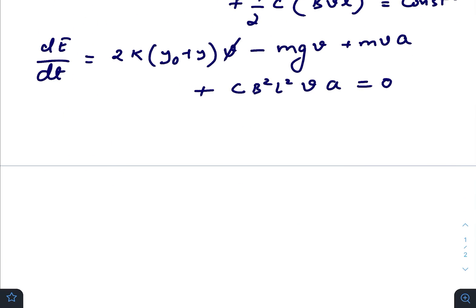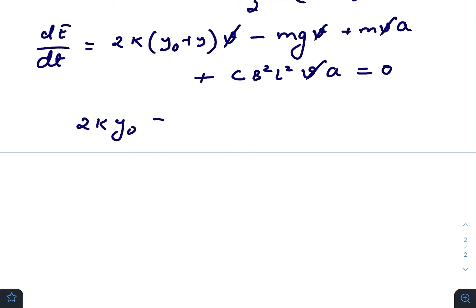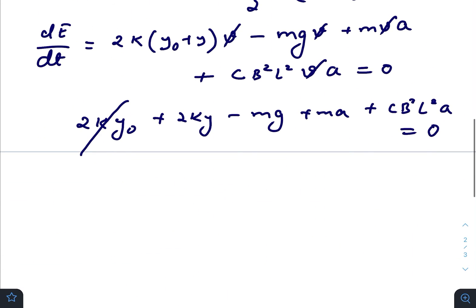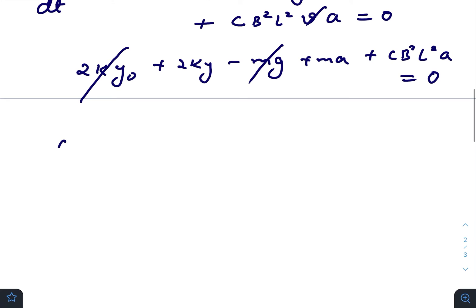The v gets cancelled out from each of the terms, so we have 2k y_naught plus 2k y minus mg plus ma plus C B squared L squared a equals zero. From the equilibrium equation, we can eliminate the 2k y_naught and mg terms. Finally we have a equals minus 2k divided by (m plus C B squared L squared) times y.